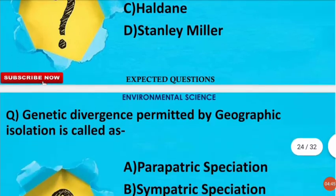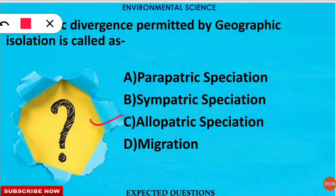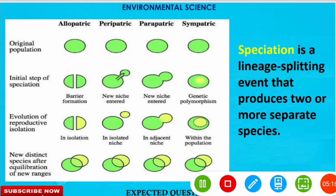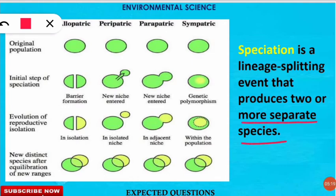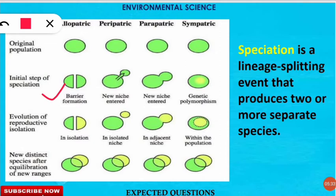The next question is: the genetic divergence permitted by geographic isolation is called what? The correct option is C — allopatric speciation. Speciation is a lineage-splitting event that produces two or more separate species from a single species. In allopatric speciation, a barrier formation takes place, and new species are formed after isolation due to that barrier.